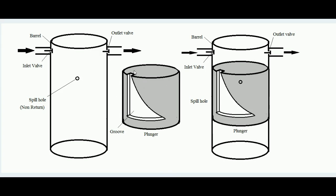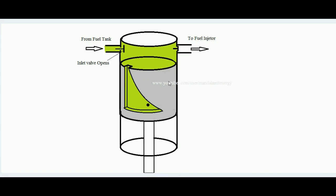What is the job of the spill hole and the groove? When diesel fills the barrel, it also fills into the groove on the plunger since that is a region of material removal. The spill hole is a non-return valve type: fuel only passes out through the spill hole when the piston is moving, especially toward the top side.